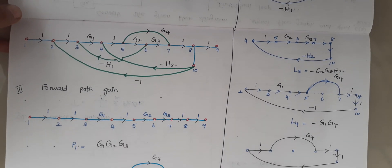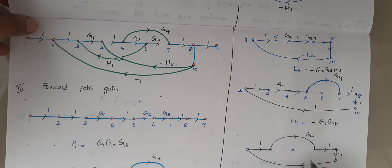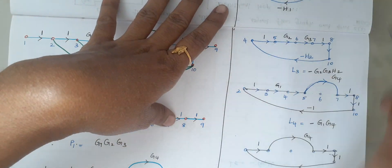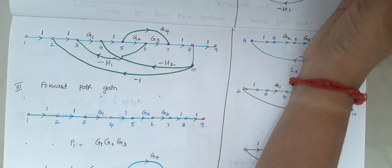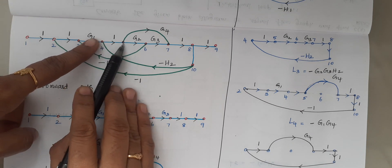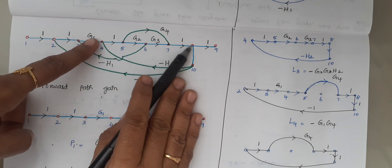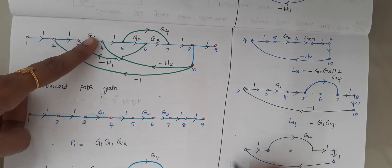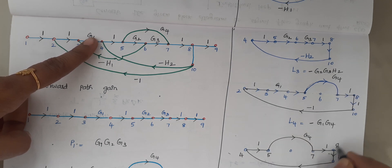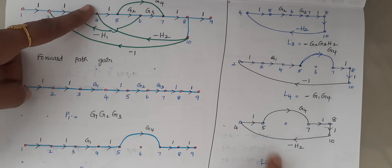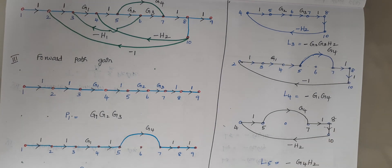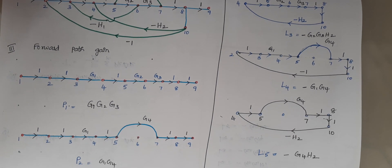The fifth loop starts at node 4, reaches 5, then from 5 to 7, then 8, then 10, and finally back to 4. The gain for this loop is minus G4 H2. So in this problem we have totally five loops and we have calculated their individual loop gains.